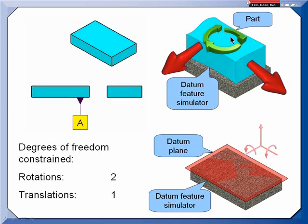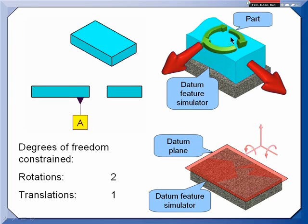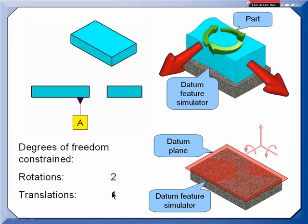Since there's one rotation remaining, two must have been constrained. And since there's two translations remaining, one translation must have been constrained.